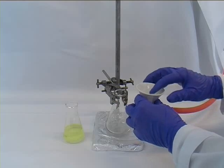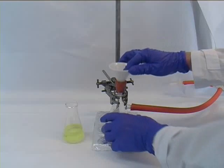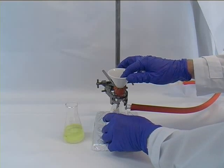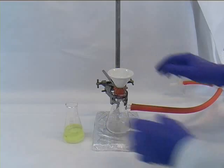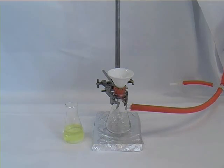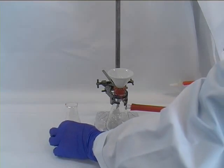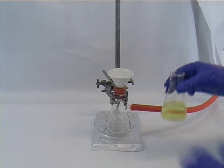We put that into the Hirsch funnel and the whole funnel on top of the Buchner flask. So at that point you would be switching on the vacuum which is the gray tab. Turn that on fully and then take your suspension.